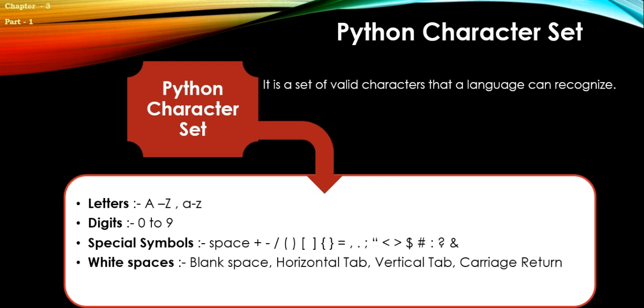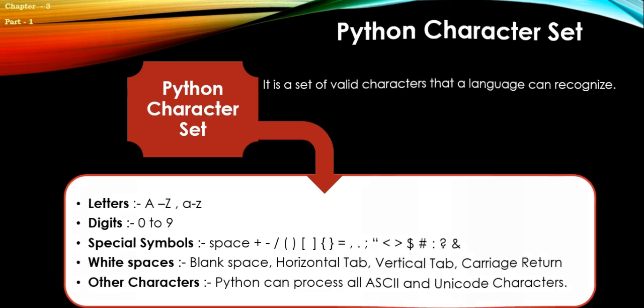It also includes spaces like blank space, horizontal tab, vertical tab character return, along with other characters. Python can process all ASCII (American Standard Code for Information Interchange) and Unicode characters.